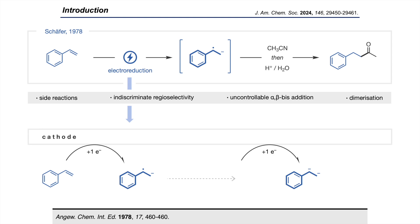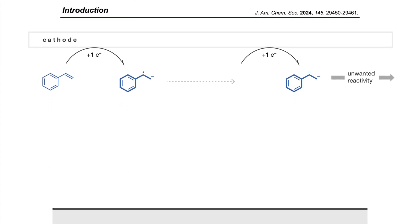This dianion has just been drawn suggestively here—it wouldn't actually exist as a 1,2-dianion. But in reality, two-electron reductions of these substrates is absolutely possible and was what we believed to be the source of unwanted reactivity.